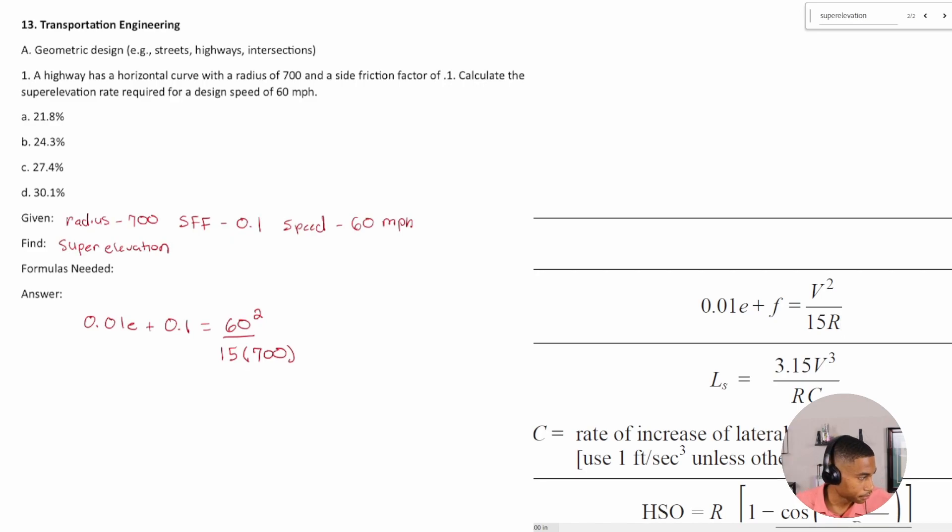All right, once I put that into my calculator, you should get your E. I'll just do this out. So it was 60 squared divided by 15 times 700. I get 0.34 minus 0.1, divide that by 0.01, and so I get my E is equal to 24.3 percent.